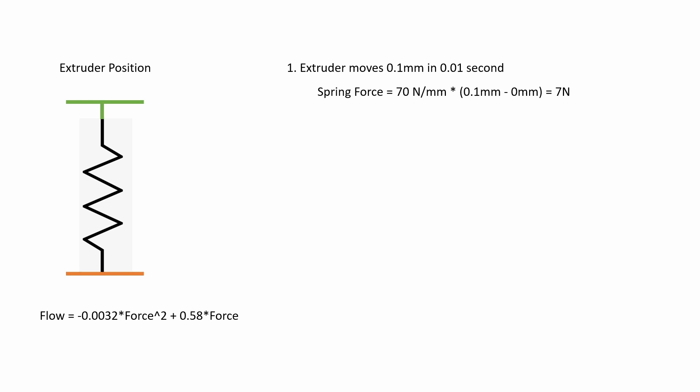So 70 newtons per millimeter times the change in position from a relaxed length—so we've just squeezed one end by 0.1 millimeters and the other end has been stationary, so we have 0.1 millimeters of change in length.